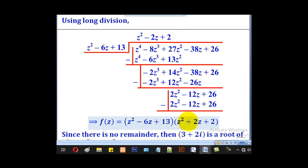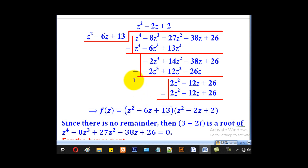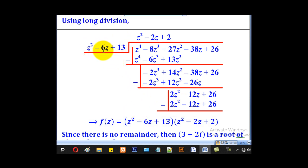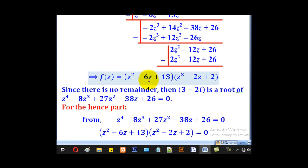2 multiply through by this, you come up with this. When you subtract, you get 0. Since the remainder is 0, it implies that this is a factor for the given quartic equation. So since there is no remainder, then 3 + 2i is a root of the given equation.